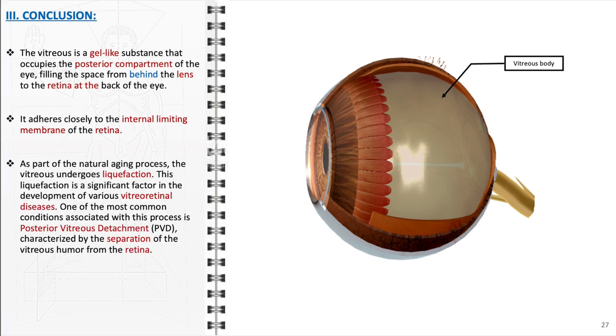Clinically, an important aspect of the vitreous aging process is liquefaction, or the gradual transformation of the vitreous gel into a more liquid state. This liquefaction is a significant factor in the development of various vitreoretinal diseases. One of the most common conditions associated with this process is posterior vitreous detachment, characterized by the separation of the vitreous humor from the retina.